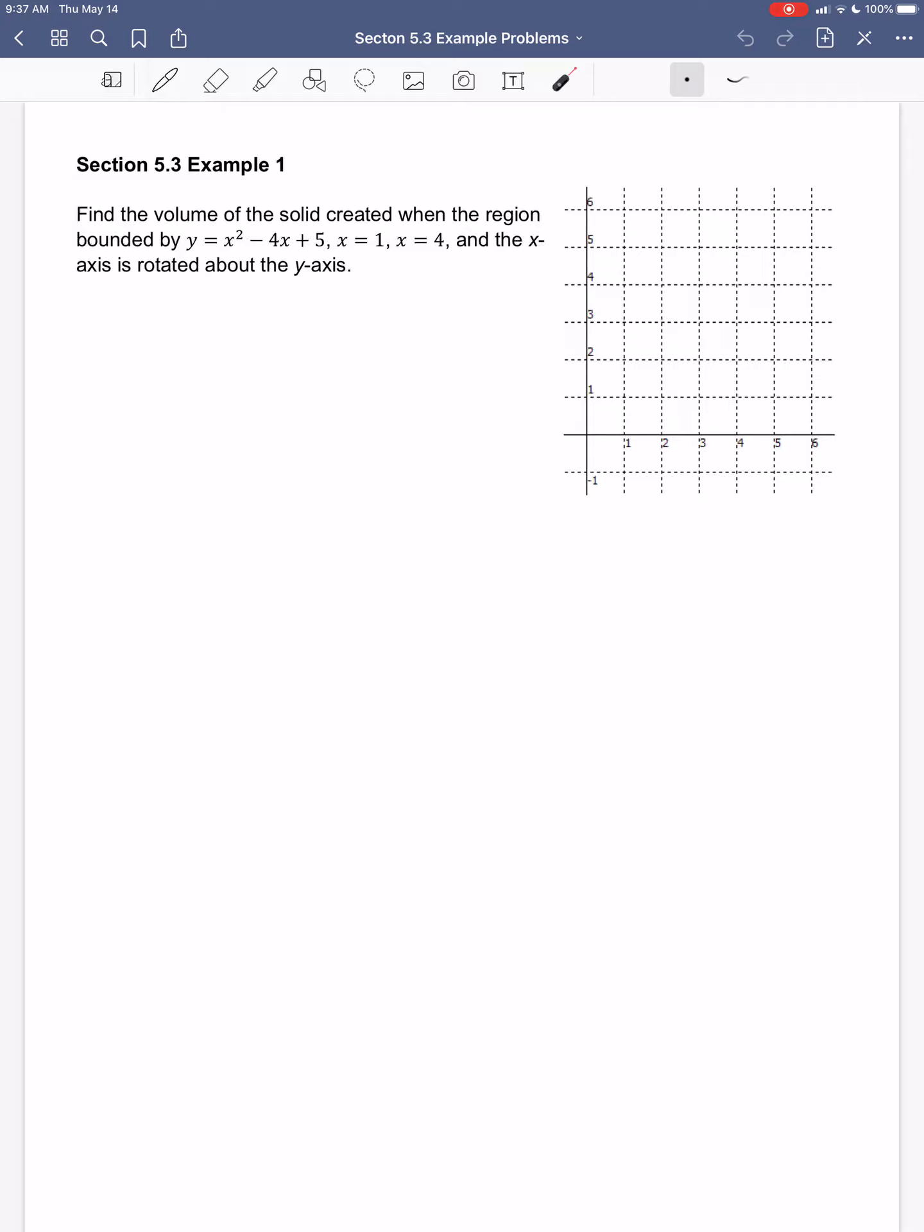Let's try to figure out what this region looks like. So y equals x squared minus 4x plus 5, that is a parabola, and the vertex for a parabola, my x-coordinate is just negative b over 2a.